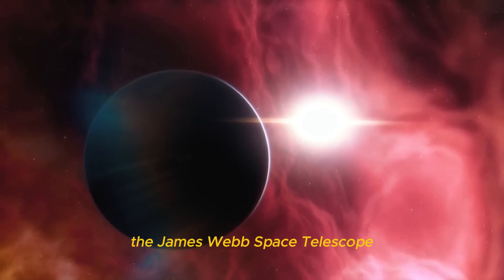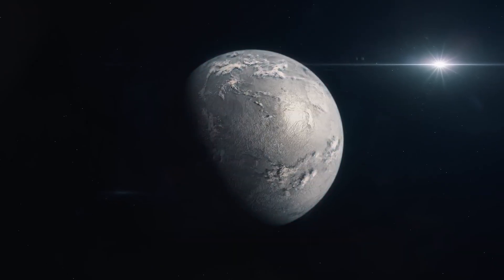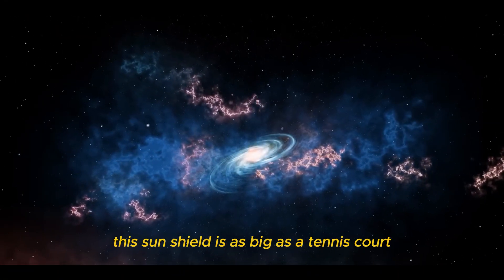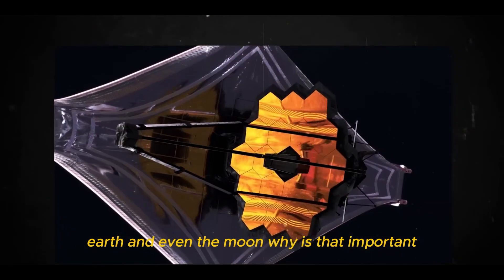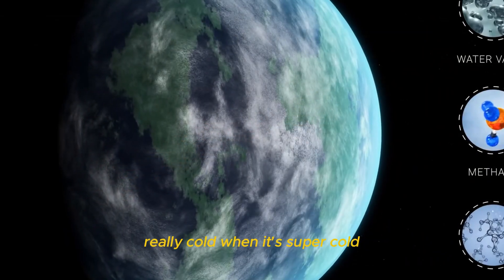One of the coolest features of the James Webb Space Telescope, or JWST, is its special sun shield. But this isn't just any sun shade, it's super smart engineering. This sun shield is as big as a tennis court. It blocks heat from the sun, Earth, and even the moon. Why is that important? Because it helps the telescope stay really, really cold.